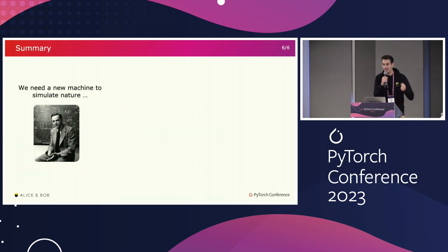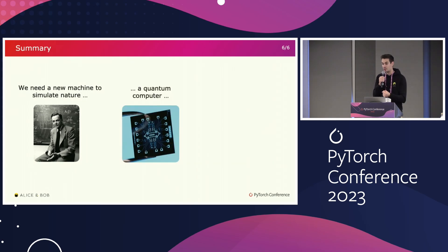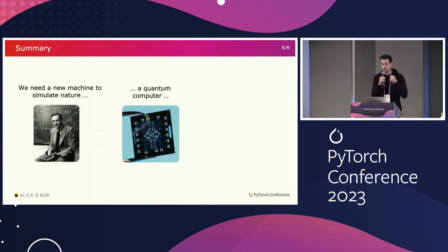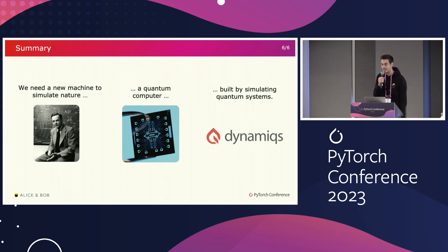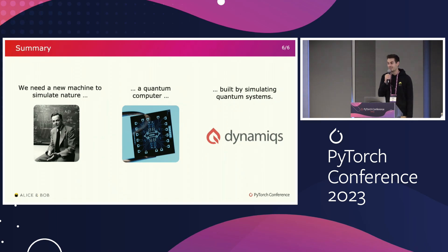To summarize: as Feynman said, we need a new machine to simulate nature, and this machine must be a quantum computer made of tiny quantum physical systems. To build this machine, we need to simulate these tiny quantum physical systems, and for this we propose the Dynamiqs library. Hopefully one day we will be able to achieve Feynman's dream of simulating nature, and maybe PyTorch will have played a part along the way. Thank you for your attention.